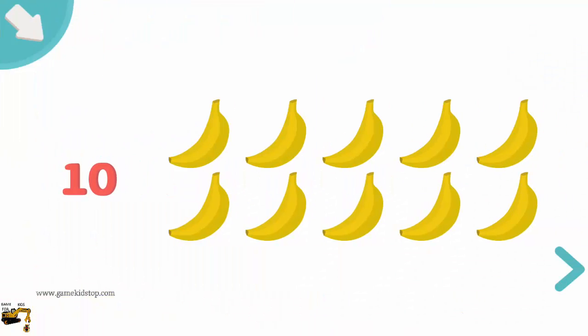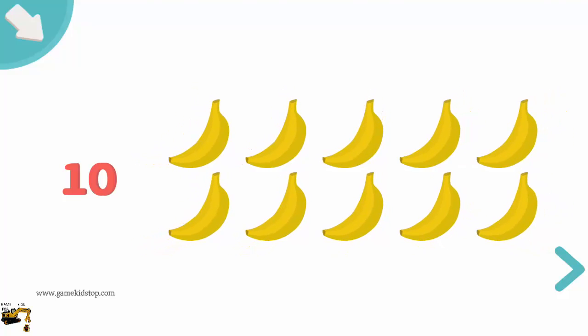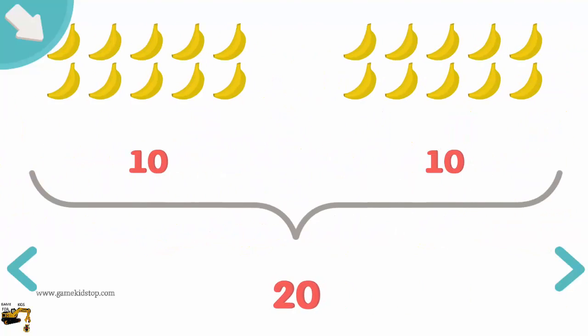This is the number 10. The number 10 is made up of two digits. The first digit shows the number of 10s. The second digit shows the number of units. This is the number 20. The number 20 is made up of two digits. The first digit shows the number of 10s. The second digit the number of units.